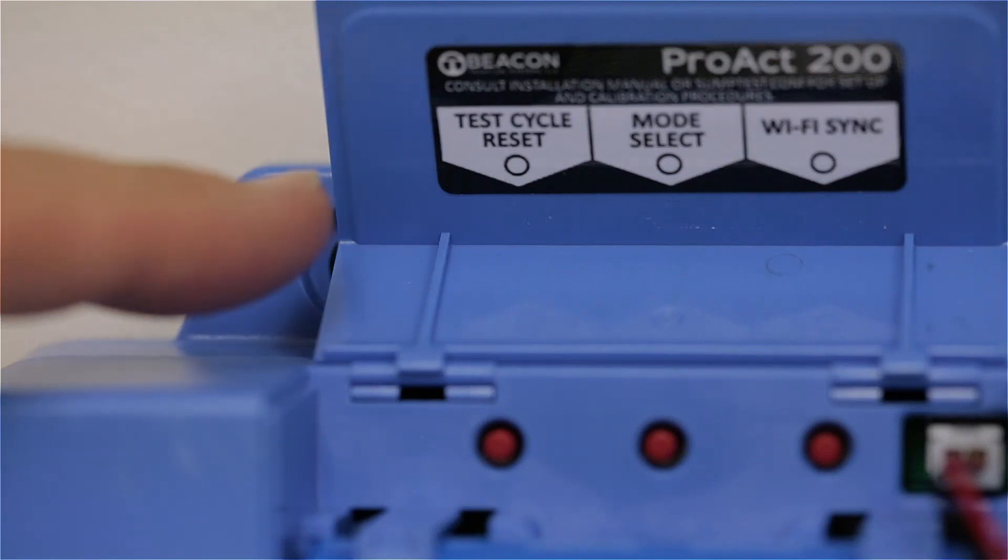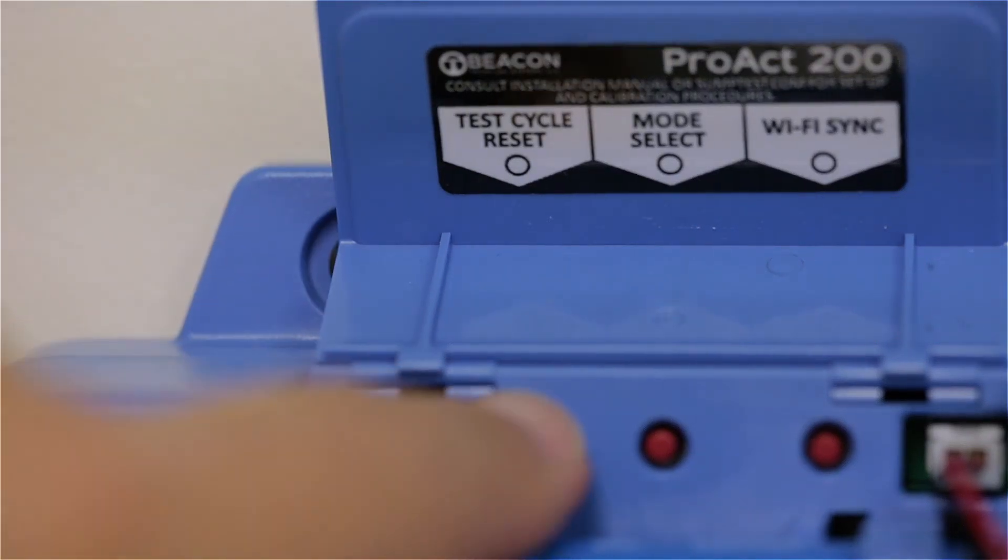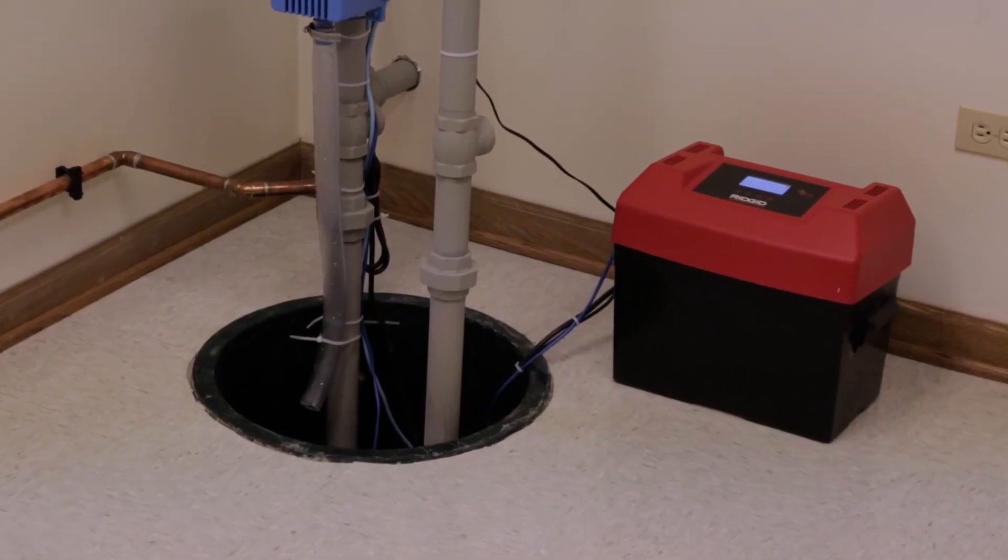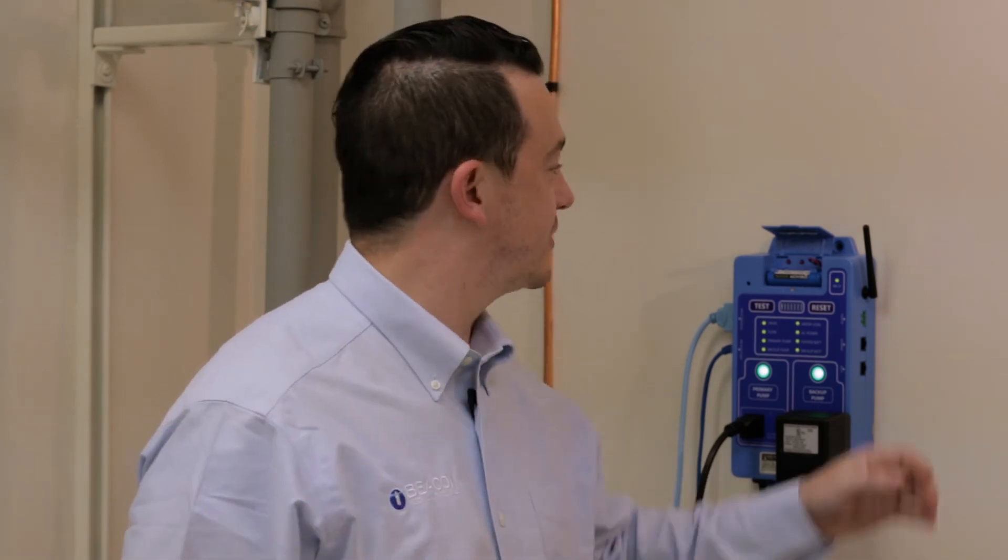However, the automatic test cycle start time can be manually reset at any time by pressing the test cycle reset button. Remove any plugs from the drain water inlets and close the sump pit cover. Congratulations! You have successfully completed the ProAct 200 installation.